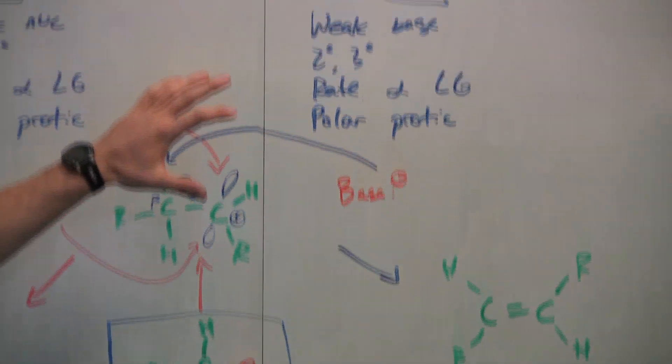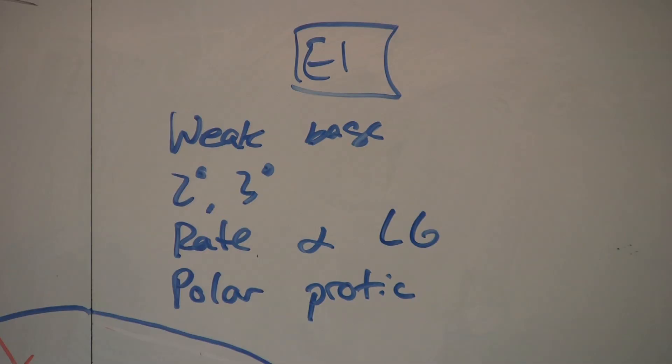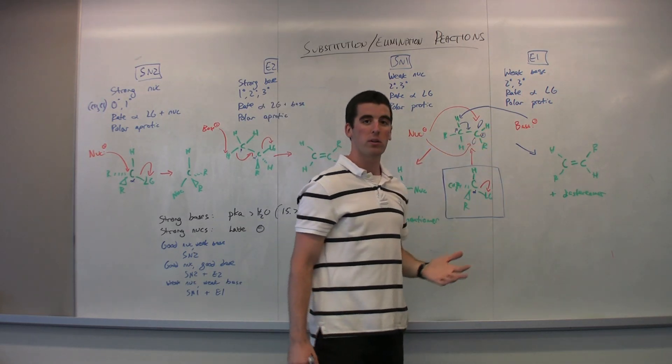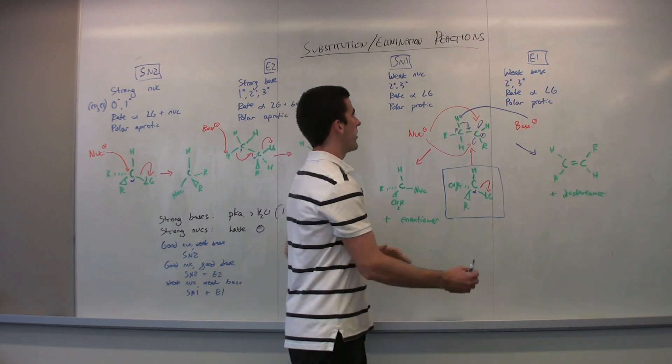So what are the characteristics of E1? We have a weak base again. Secondary tertiary carbons, just like SN1 here. The rate is, again, dependent on one thing, and polar protic solvent. So in the cases of SN1 and E1, you want polar protic solvents because it stabilizes that carbocation.